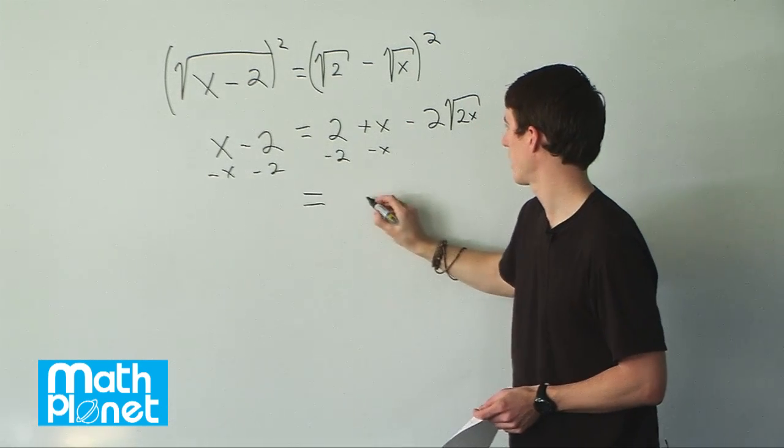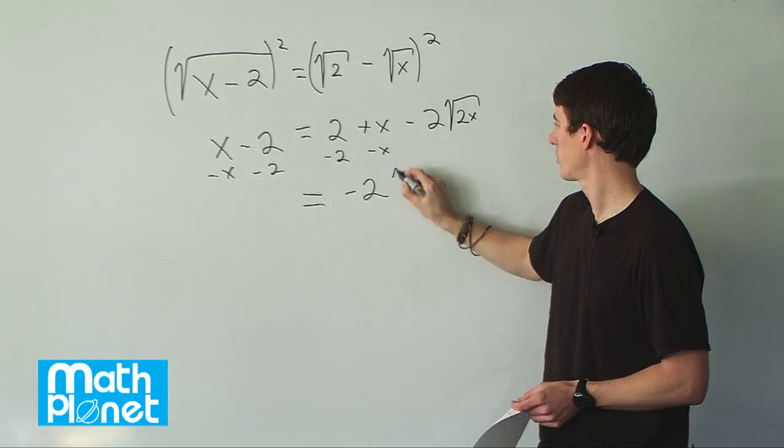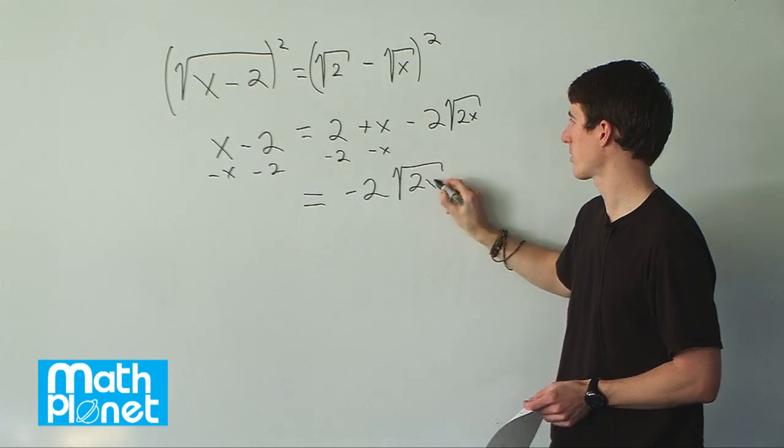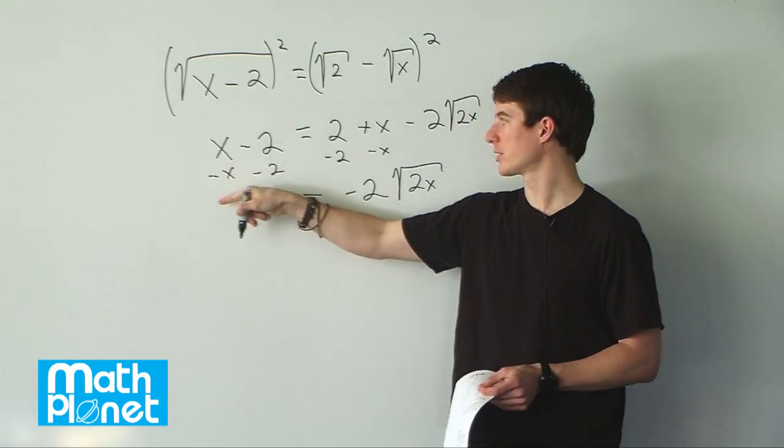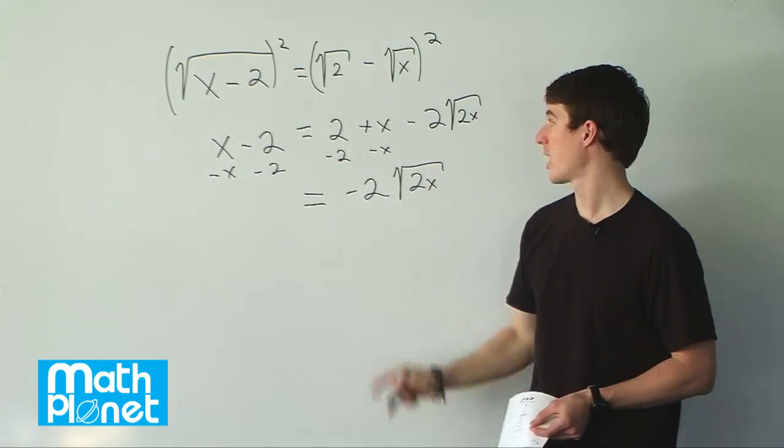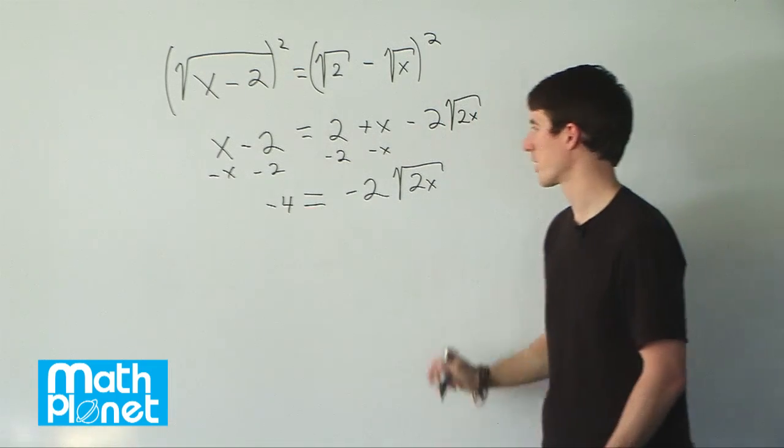So we just have on the right hand side negative 2 root 2x. On this side, luckily these x's cancel as well, and we just get negative 4, which is great.